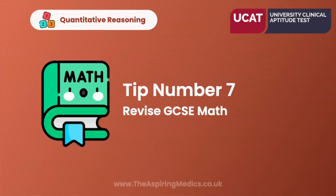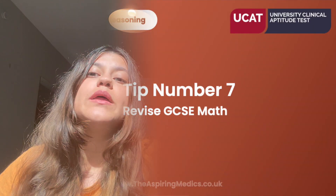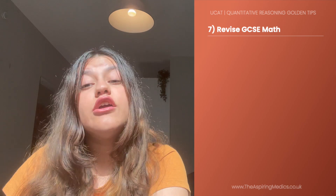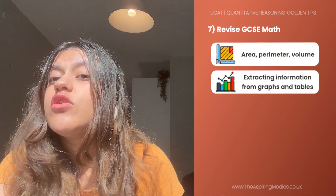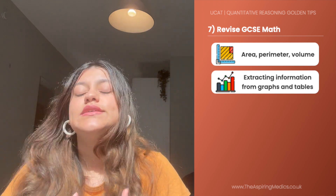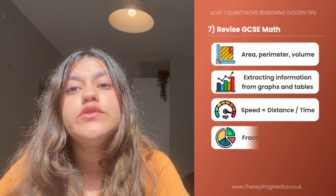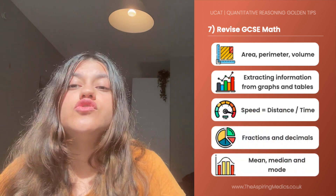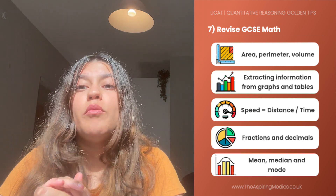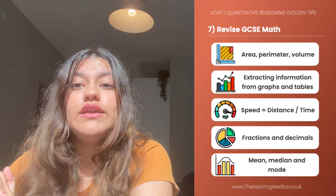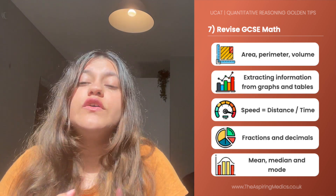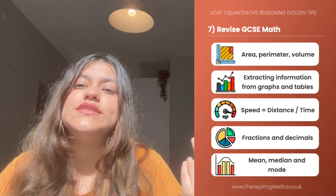Our final tip is to recap certain GCSE math topics that may crop up on your UCAT quantitative reasoning section. Some of these topics include area, perimeter and volume, extracting information from complex graphs or tables, speed, distance, time, fractions, decimals, mean, median, mode, and so on. These are topics commonly found in both GCSE math and the UCAT quantitative reasoning section. So it may be useful to spend some time going over your GCSE math textbook and recapping these topics quickly.